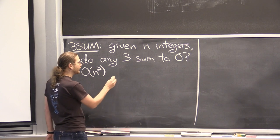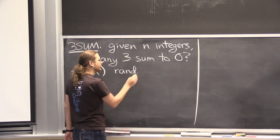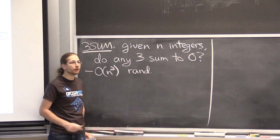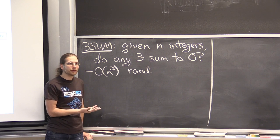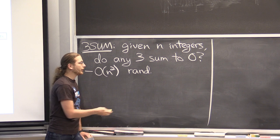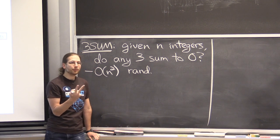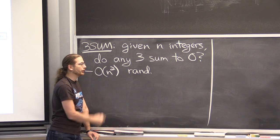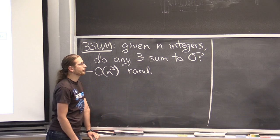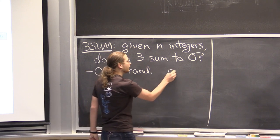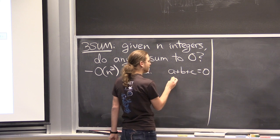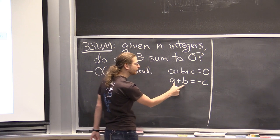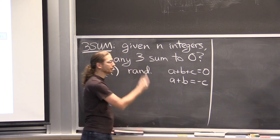An O(n²) randomized algorithm is easy: first build a dictionary — a hash table — of all the integers. Then look at all pairwise sums. For each pairwise sum, check whether its negation is in the hash table in constant time. This works because a + b + c = 0 is the same as a + b = -c. So you look at all pairwise sums and see whether the negation is in the list.